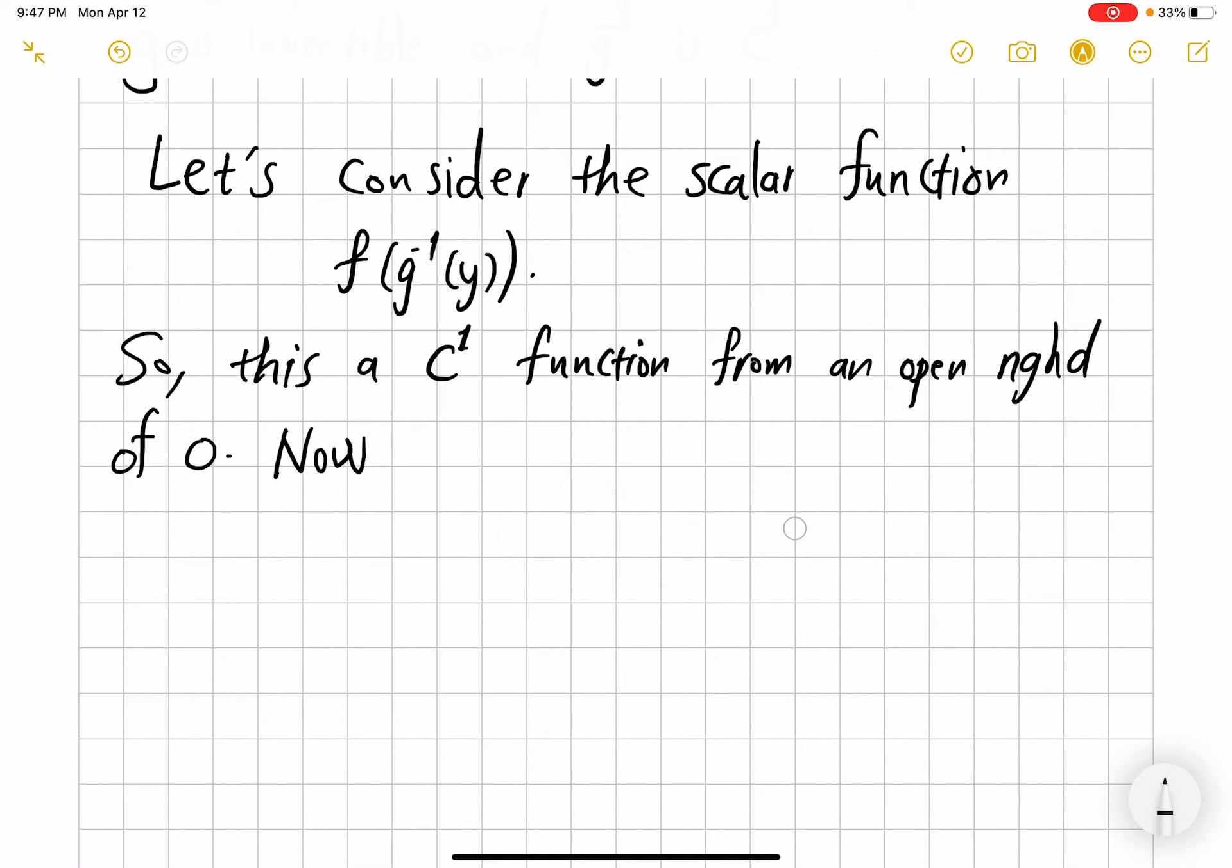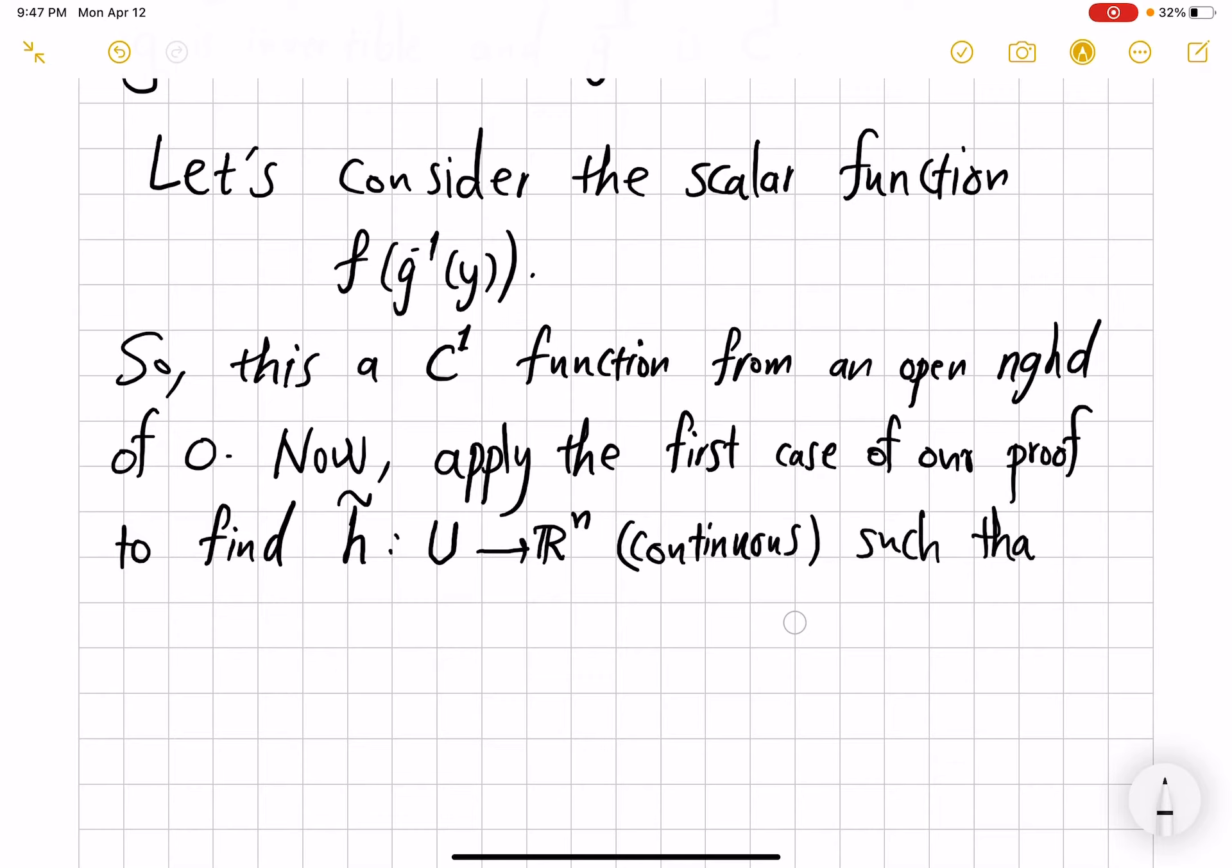Now, apply the first case of our proof to this function, so to f composed g inverse sitting in the role of the original f. So to find a vector field, which I want to denote by h tilde rather than h, from some open neighborhood into ℝⁿ, continuous, such that for every x in U, my function, my scalar function, which is f of g inverse of y equals h tilde of y dot product with y.